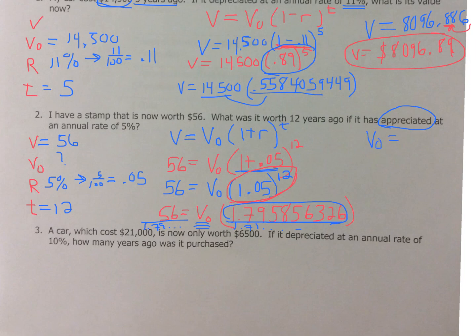So, V_O equals, when I take 56 divided by that 1.79 and some change, I get a grand total of 31.18289 blah, blah, blah. Now again, I'm rounding to two places. So this two says, this stays. So, my original value of this stamp was $31.18.